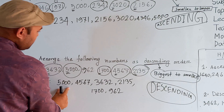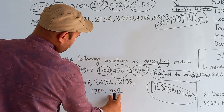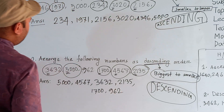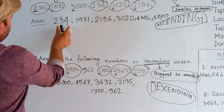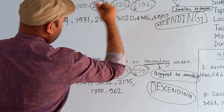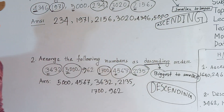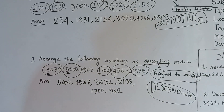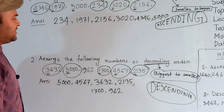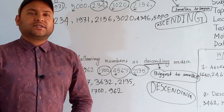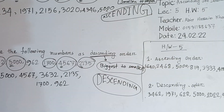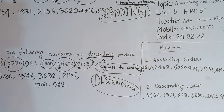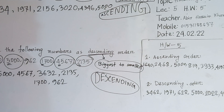So to summarize: in ascending order, we arrange from the smallest number to the biggest, and in descending order, from the biggest number to the smallest. I hope you understood how to arrange numbers in ascending and descending order. Practice more at home, take care of yourself, obey your parents, and see you soon.